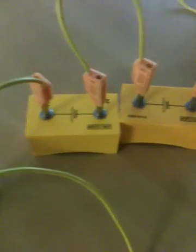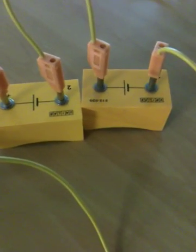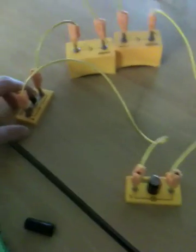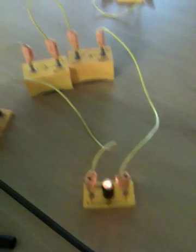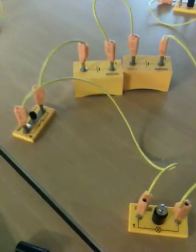First, our basic circuit. Two cells wired up next to each other, so you can check they're both pointing the same direction. A switch and one lamp. And of course, if we press the switch, the lamp comes on. So, a dead simple series circuit to start off with.